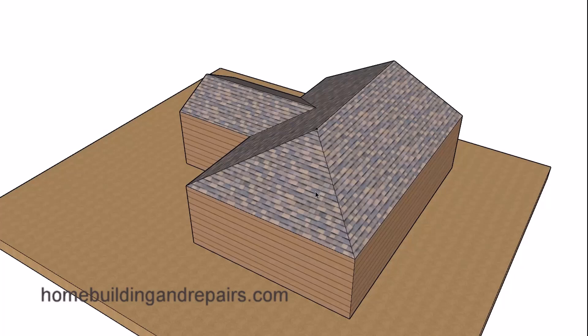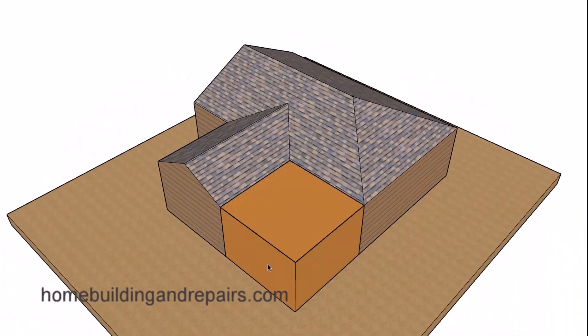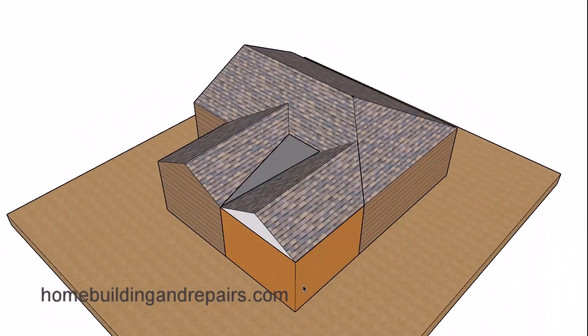Here is another roof design idea if you have this situation and you're thinking about putting a home addition in this spot. You could do something like this where you have a gable roof on this side and then it goes and dies into the hip roof here.